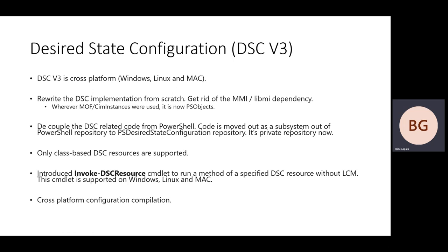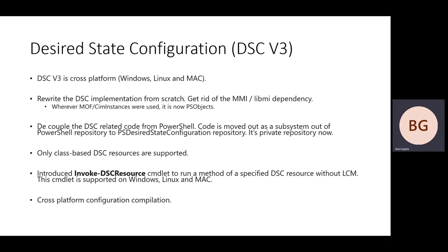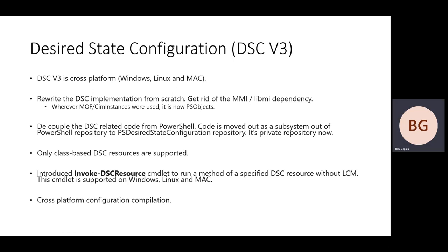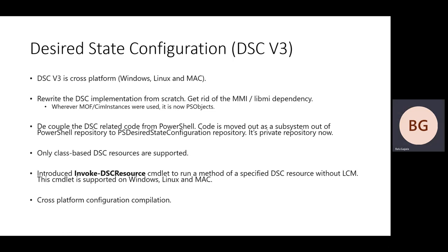That is a very basic approach. A more complex solution can be something like guest configuration, which is an Azure service. If you have a non-Azure machine, you can onboard it as an Arc server to Azure while still keeping the machine in your on-premises environment. You don't need a public IP or anything — your machine stays in your on-premises environment, but you onboard it to Arc and gain DSC functionality using guest configuration.